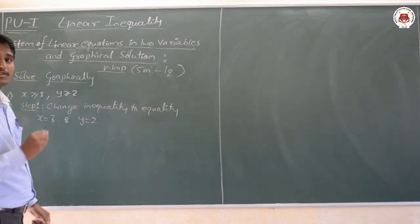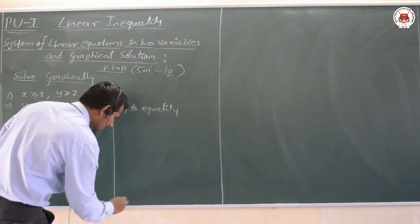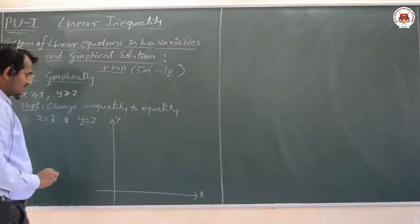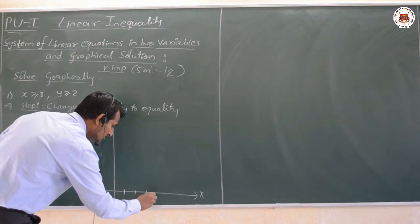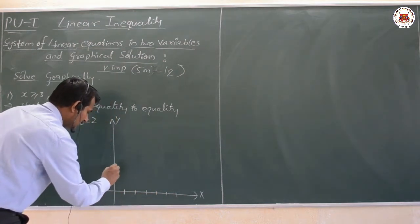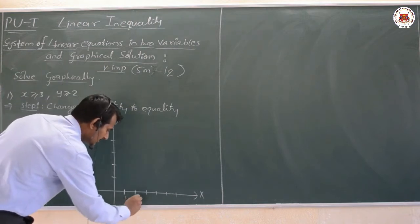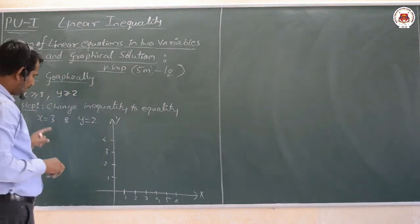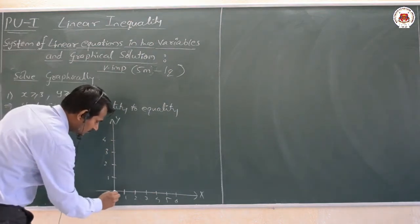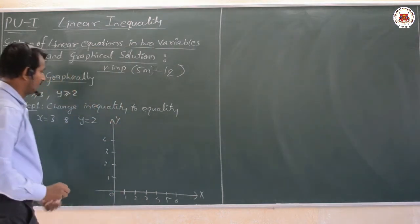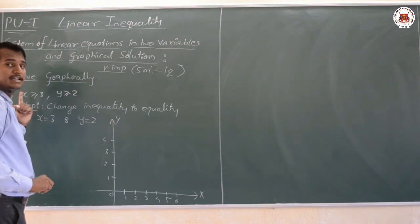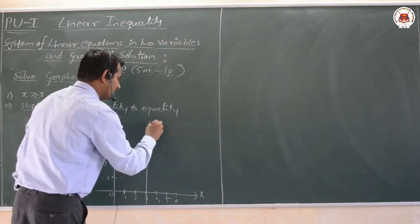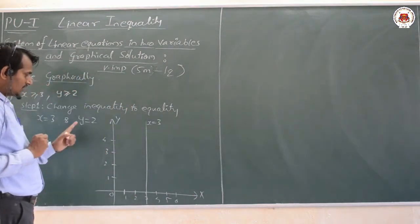Now we draw the graph. Mark the axes: x-axis and y-axis, with values 1 through 6. We mark x = 3 as a vertical line at x = 3. Since the inequality is ≥ (greater than or equal to), we use a darkened (solid) line.